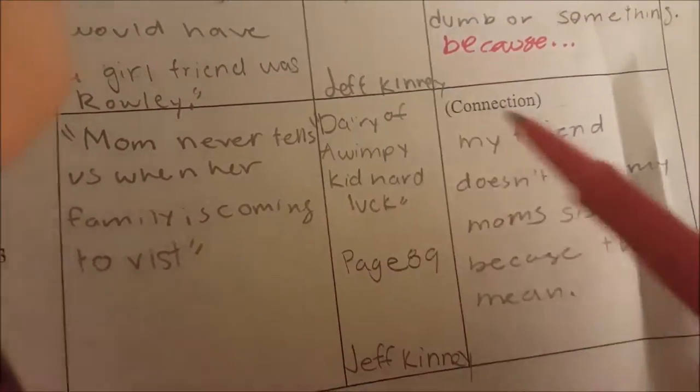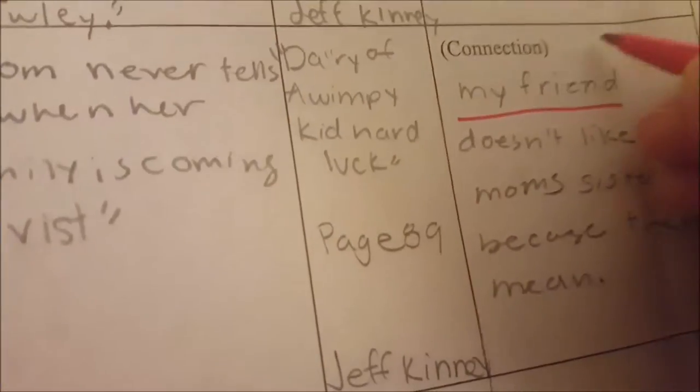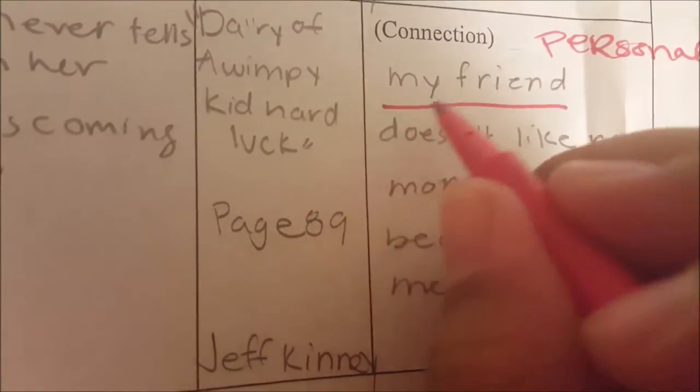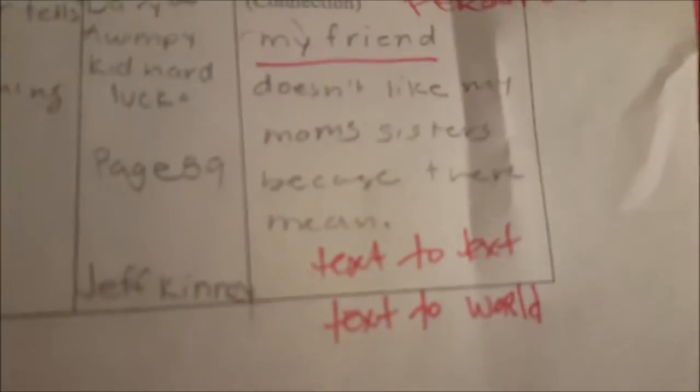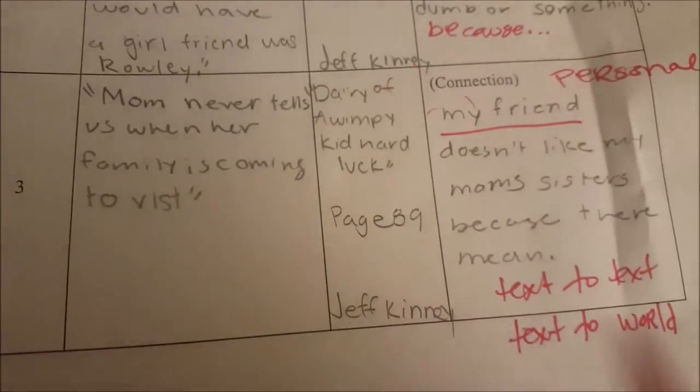Now, we see a connection here: 'Mom never tells us when her family is coming to visit.' And the student writes: 'My friend doesn't like my mom's sisters because they're mean.' When you start off with 'my friend,' I already know it's a personal connection — and remember, I asked you to make it a text-to-text or text-to-world connection, not a personal connection. It's really important that you don't make personal connections.